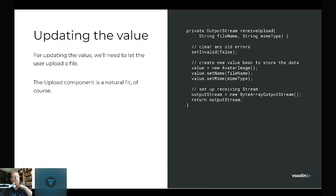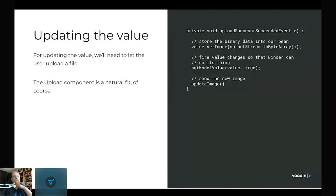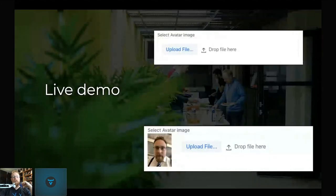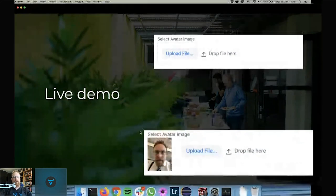On upload success, when we actually have the new value, we call set model value. That's the key thing — whenever you change the value internally, you want to let the framework know by calling set model value, and then update the image at the end. Let's do a live demo.